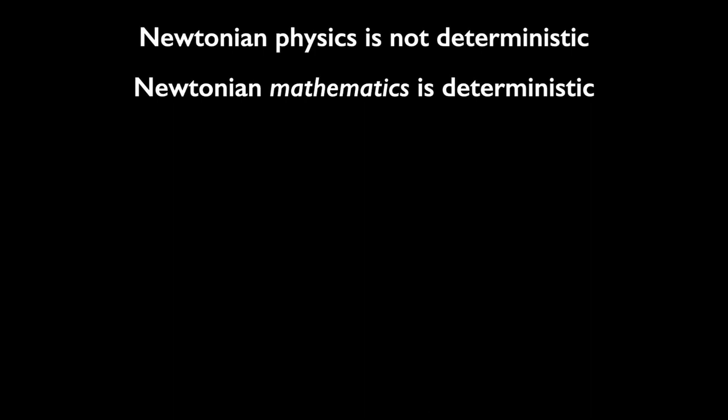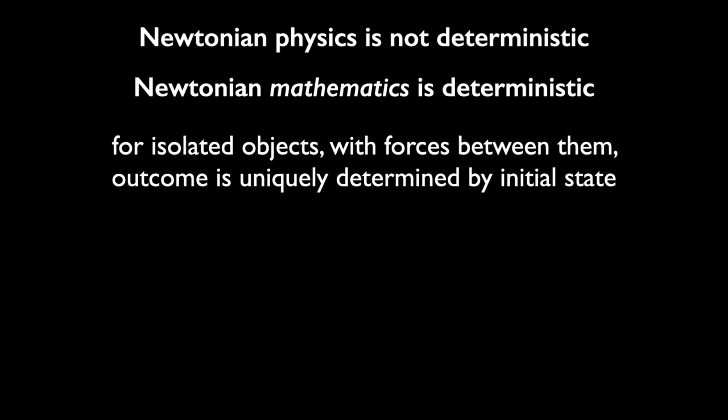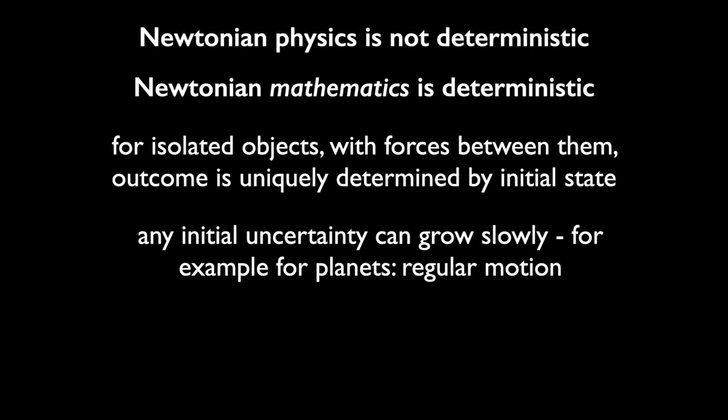There's an old English dictionary which defines chaos as a confused heap of mingle-mangle. Now, I want to tell you one thing about it, which is that Newtonian physics is not deterministic. Newtonian mathematics is deterministic. I want to explain the difference. If you have isolated objects with forces between them, the outcome is indeed uniquely determined by the initial state. Any initial uncertainty can grow slowly — for example, planets over short timescales show regular motion — or quickly, for example pinball machines: that's chaotic motion.